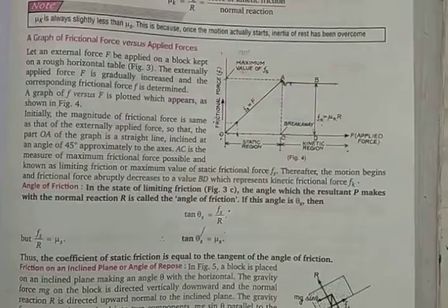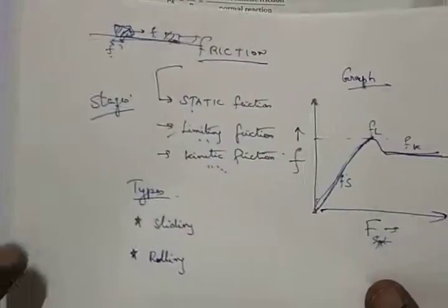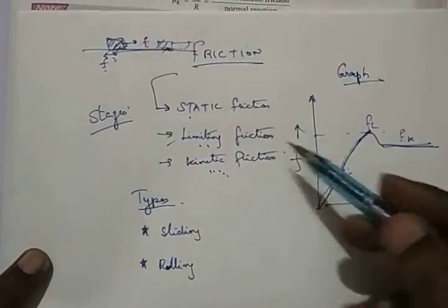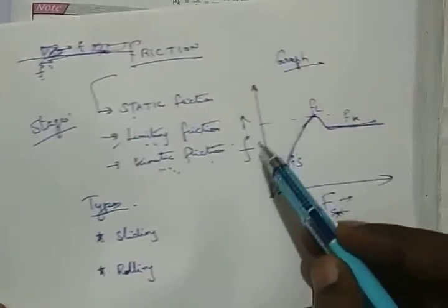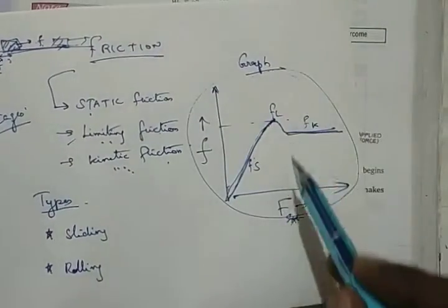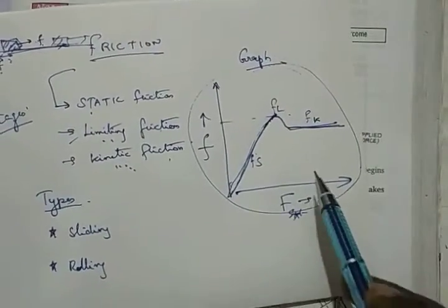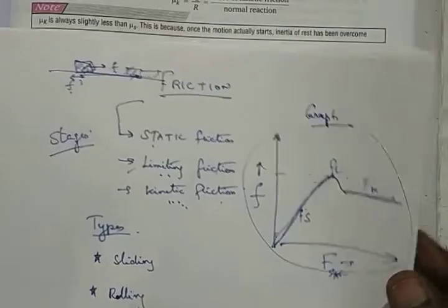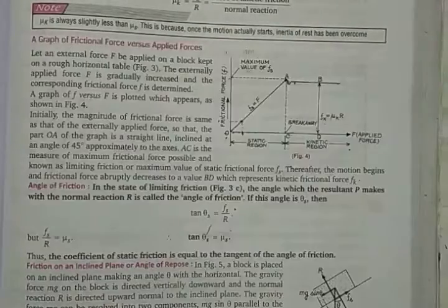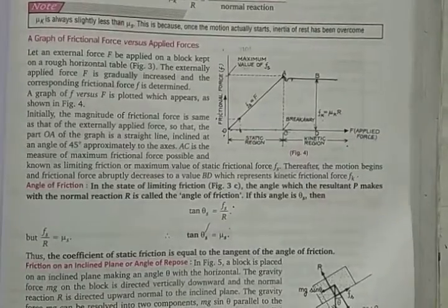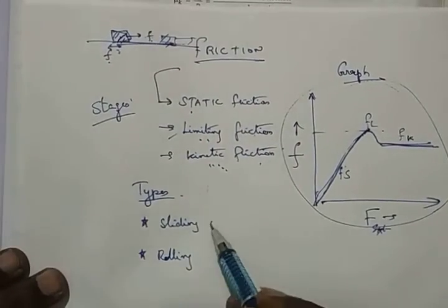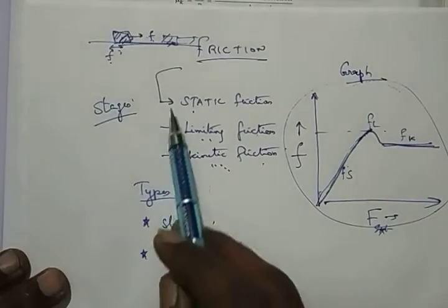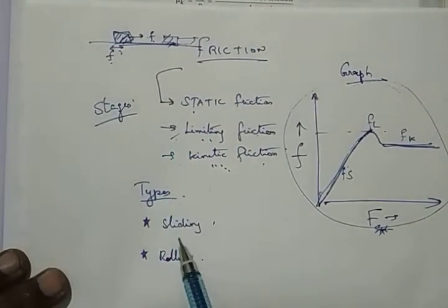Don't spend much time on other factors — keep studying static friction and limiting friction again and again. If you learn this particular part thoroughly and understand how it works, that is enough. Don't go too much into the basics. Then, the types of friction are sliding friction and rolling friction — while the previous ones were stages of friction, these are types of friction.